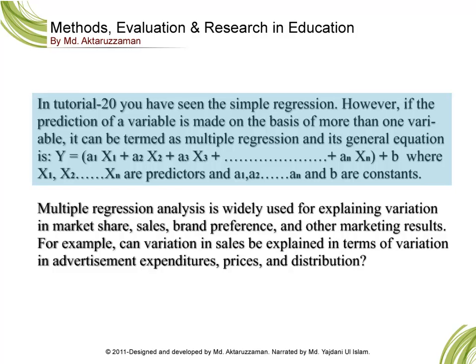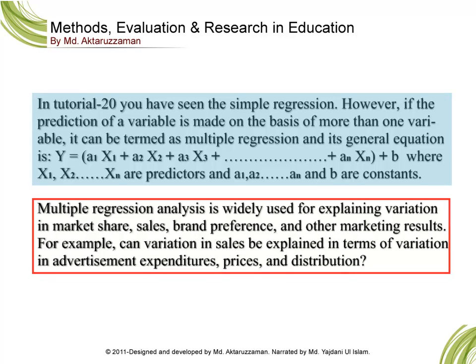In tutorial 20, you have seen simple regression. However, if the prediction of a variable is made on the basis of more than one variable, it can be termed as multiple regression. Its general equation is Y = a1X1 + a2X2 + a3X3 + ... + anXn + b, where X1, X2, ... Xn are predictors and a1, a2, ... an and b are constants.